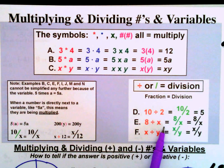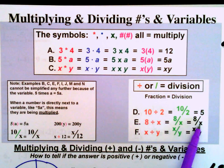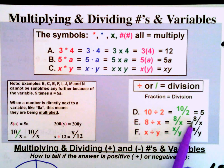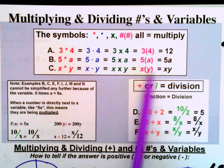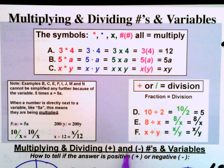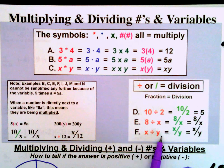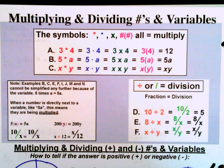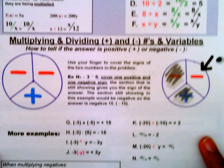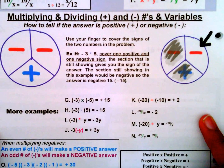Just as 5 times a is 5a, if we have 8 divided by x, that's just 8 over x — we can't simplify it further. And the same is true for division with two variables: if we have x divided by y, we just write it as x over y.